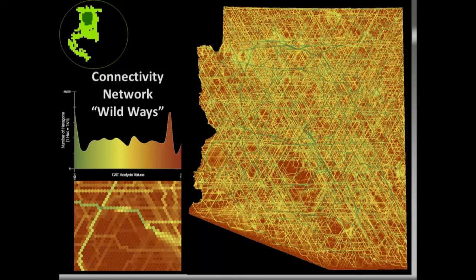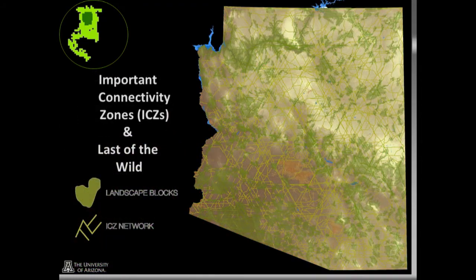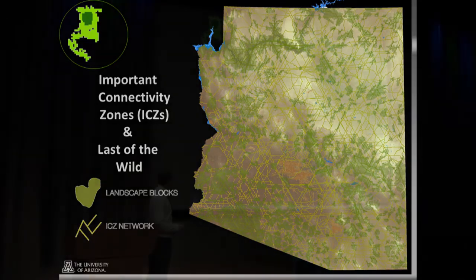We were also tasked with understanding how the landscape connectedness of the state plays out given this built infrastructure and the structural intactness of the landscape. Graph theory works really nicely for evaluating a large problem like this. What we're really interested in is taking an analysis like this to construct a conservation blueprint based on landscape intactness and naturalness throughout the state of Arizona.